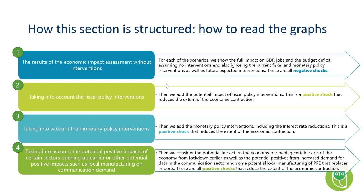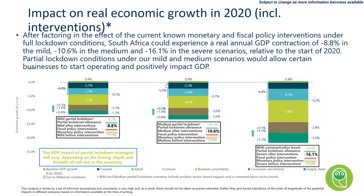How do you need to consider the graphs? We start out with the full result without any interventions, then we look at fiscal policy interventions, monetary policy interventions, and then any potential impacts of certain sectors starting to open up earlier. What you see is the impact of the full interventions on the economy without any other factors: without interventions, minus 11.2%. With the fiscal and monetary policy interventions, minus 8.8%. And if we start to unlock the economy earlier, minus 8.7%. So basically in the mild scenario, the economy would probably contract at very close to 9%.